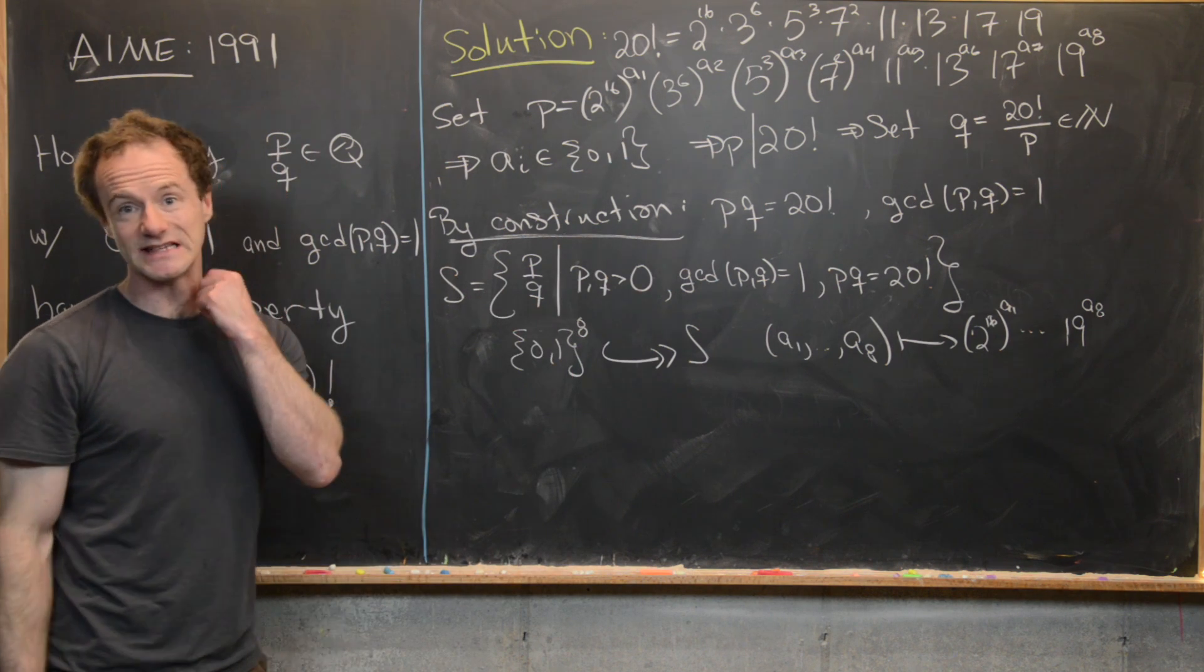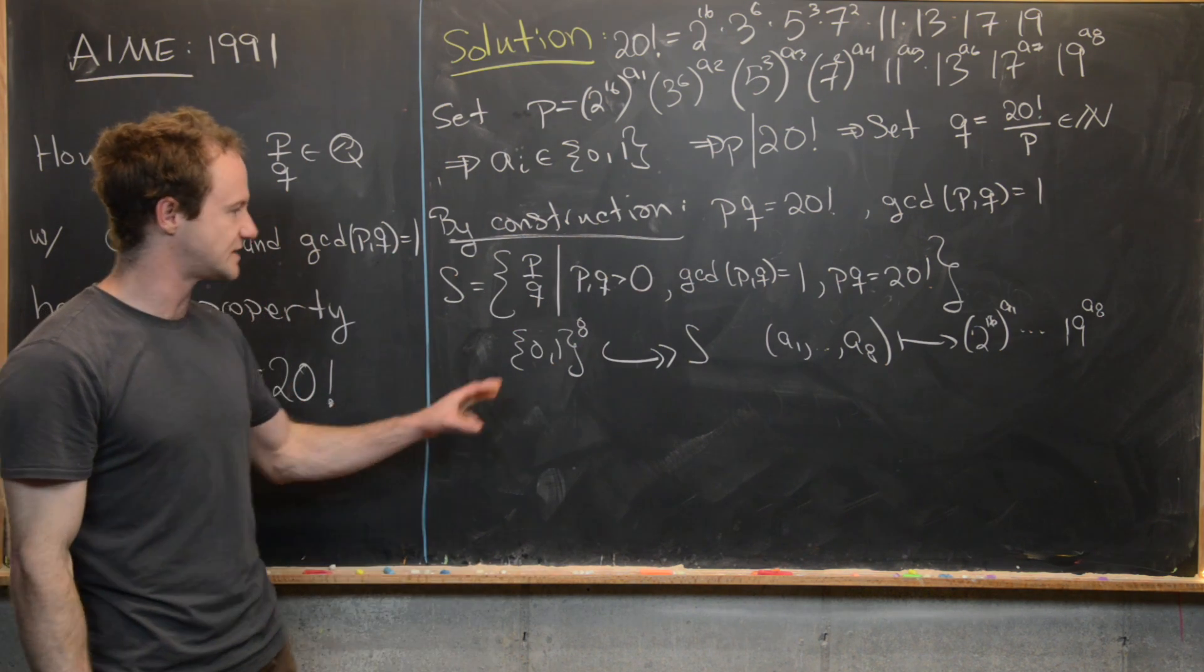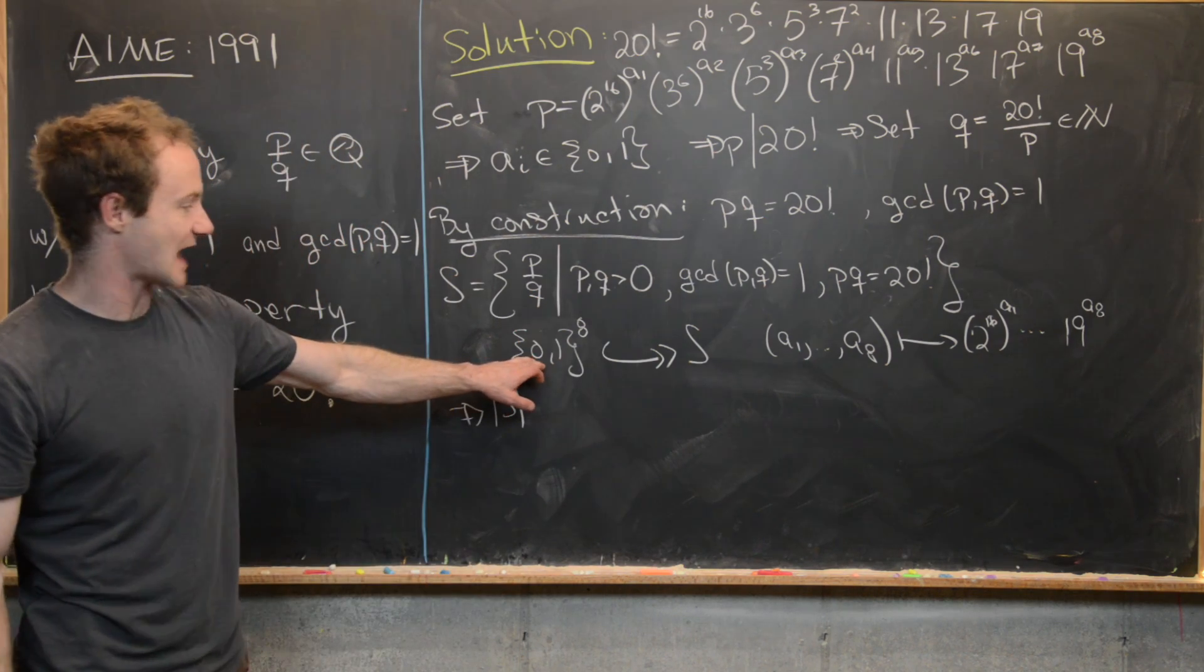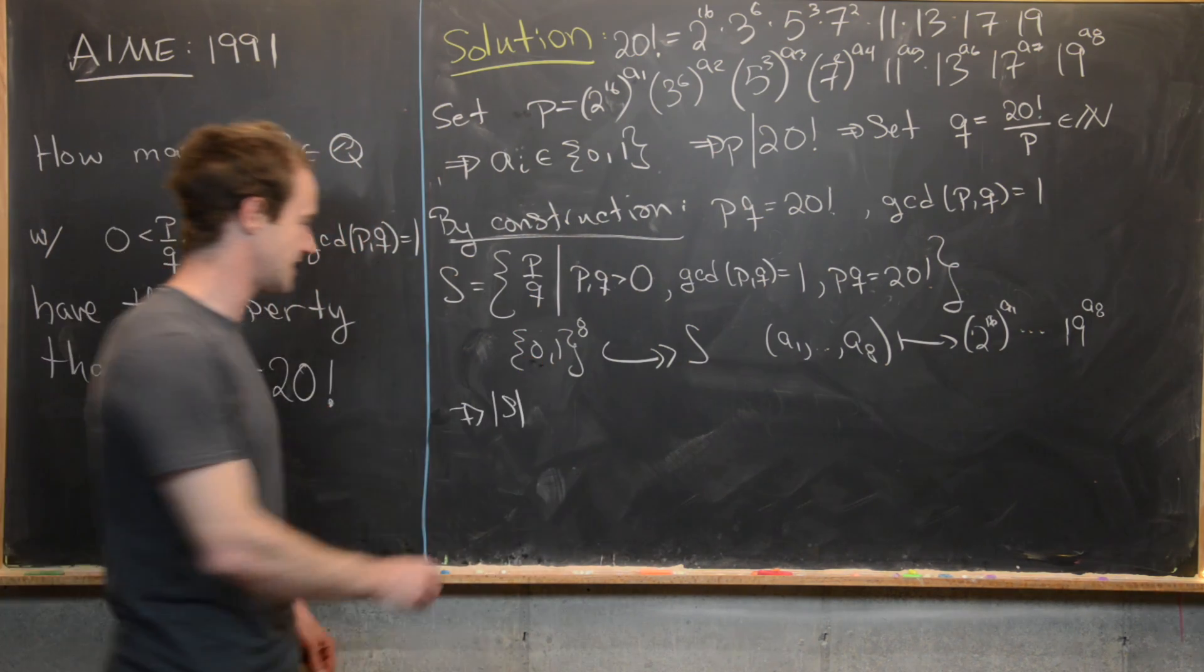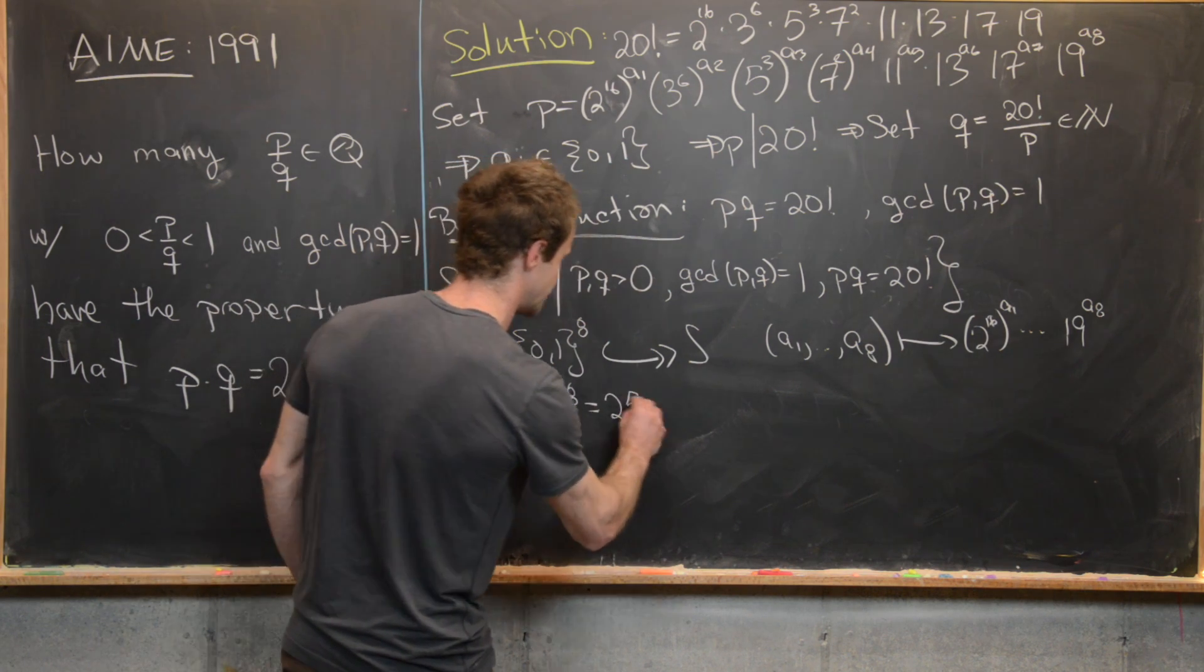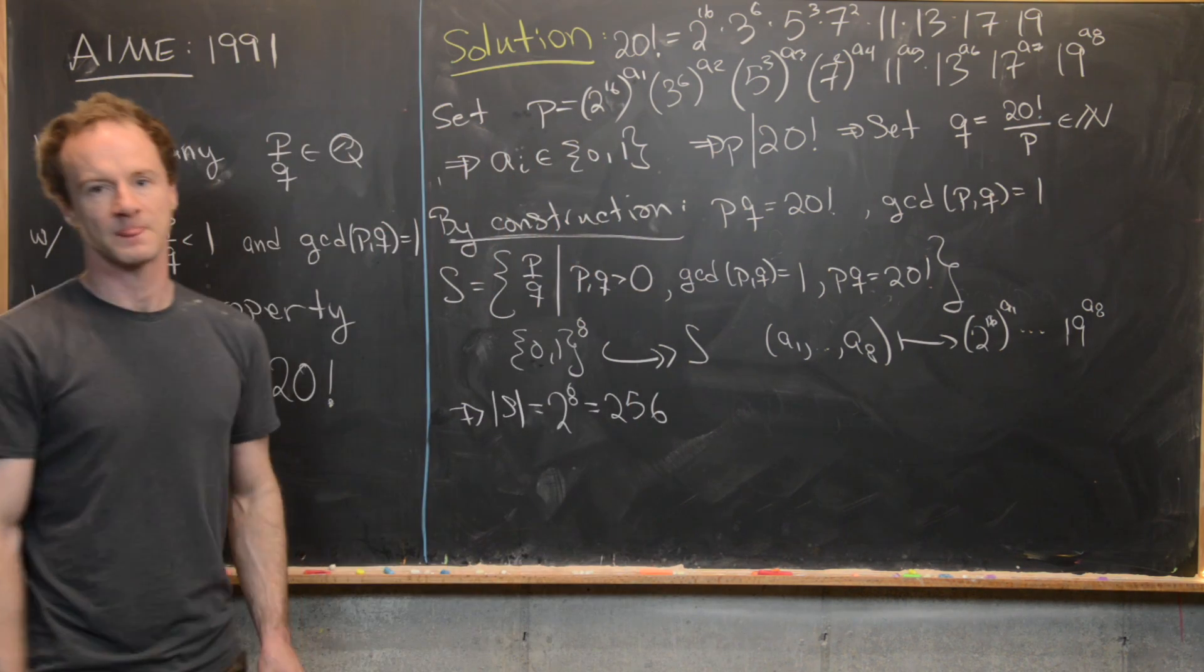So it's easy to check that that's one-to-one and onto, which tells us that the size of S is the same thing as the size of this set, but the size of this set is clearly 2 to the 8, which is equal to 256.